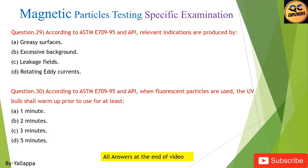Question 30: According to ASTM E709-95 and API, when fluorescent particles are used, the UV bulb shall warm up prior to use for at least: (A) 1 minute; (B) 2 minutes; (C) 3 minutes; (D) 5 minutes.